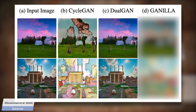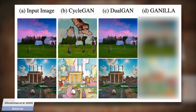What you see here is a set of results created with a technique called CycleGAN. This could even translate daytime into nighttime images, re-imagine a picture of a horse as if it were a zebra, and more.